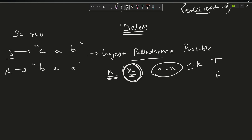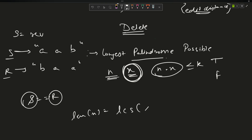The problem is: how will I find the longest palindrome possible? I have string s and its reverse r. I want the longest subsequence of s that equals r — which is the longest common subsequence between s and r. For 'aab' and 'baa', the LCS is 'aa', which is indeed a palindrome.